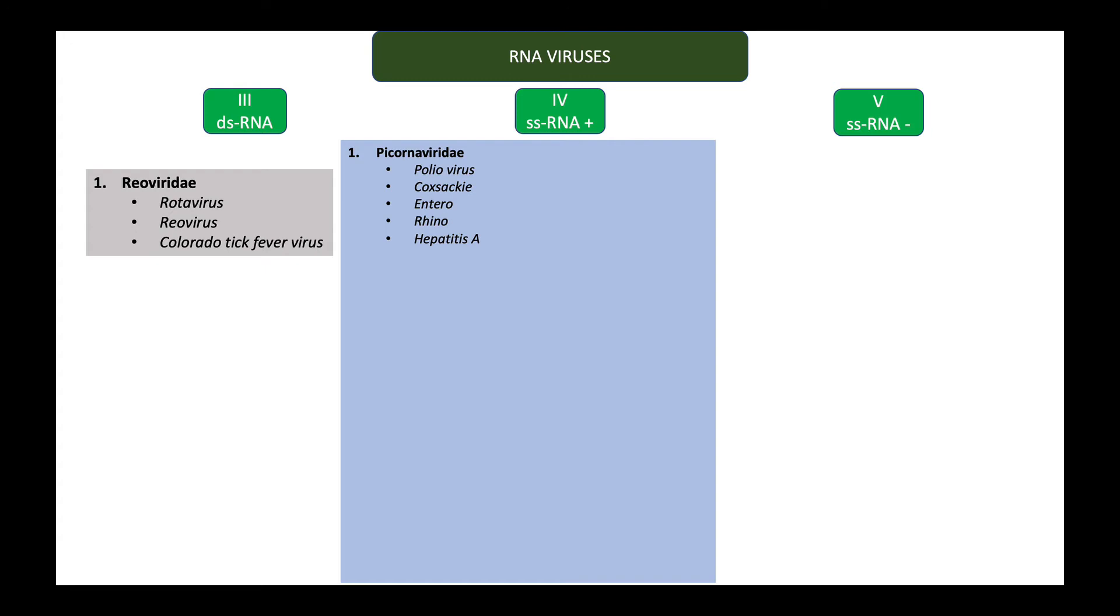You notice that in the same family, we have viruses that cause illnesses in different systems of the body. Polio affects the nervous system, coxsackie the skin, entero virus affects the skin, GIT, and CNS, rhino virus the respiratory system and GI system, hepatitis A affects the liver. So what we see is that the virus family does not define the illness that the species of the virus can cause.